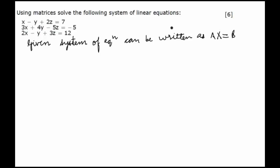On comparison we get that A is the matrix of coefficients: 1, minus 1, 2; 3, 4, minus 5; 2, minus 1, 3. X will be the column vector x, y, z.